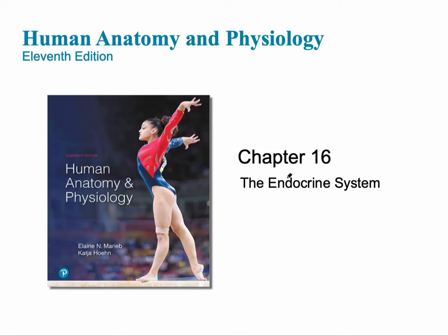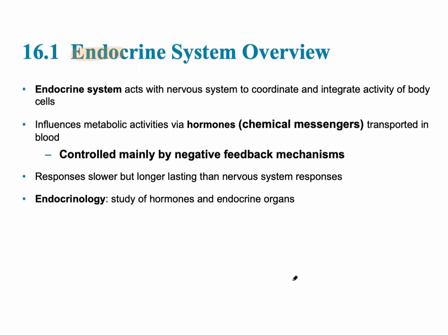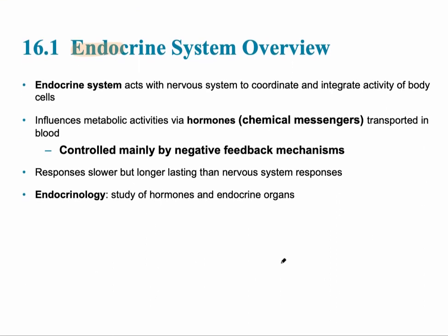Chapter 16 is on the endocrine system. The endocrine system is the second control system in our body, and it acts along with the nervous system to help coordinate and integrate the activity of the body cells. It influences many different metabolic activities via hormones, which are chemical messengers transported in the blood. The prefix 'endo' means inside, so hormones travel inside the blood or extracellular fluid.